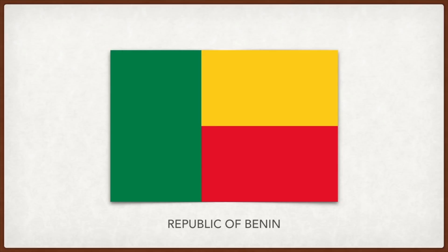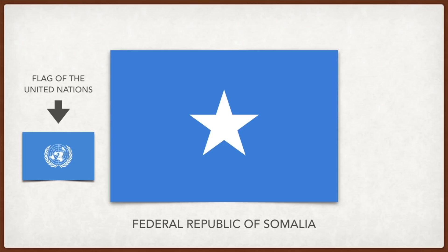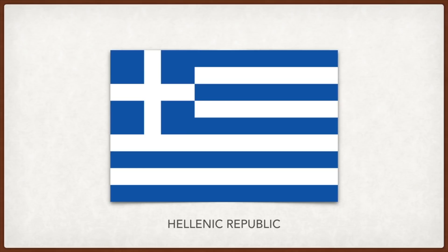Somalia: the flag was inspired by the flag of the United Nations in recognition of their help in transitioning Somalia to independence; it now symbolizes the blue sky and the Indian Ocean. Greece: the cross represents Eastern Orthodox Christianity. The nine stripes represent either the syllables of the Greek phrase 'freedom or death,' the nine Greek letters of the word freedom, or the nine Muses — the goddesses of art and civilization. The colors are for the sky, the sea, and the clouds of Greece.